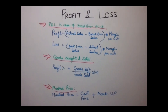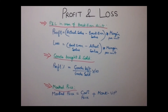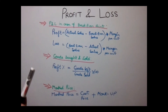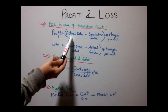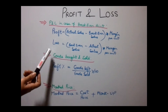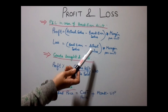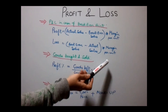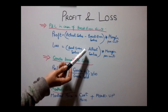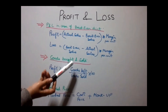Now let's discuss some formulas related to these types of costs. Profit at Break Even Point equals actual sales minus break even sales, multiplied by margin per unit. Loss is the opposite: break even sales minus actual sales multiplied by margin per unit. A loss occurs when break even sales are greater than actual sales, and a profit occurs when actual sales are higher than break even sales.